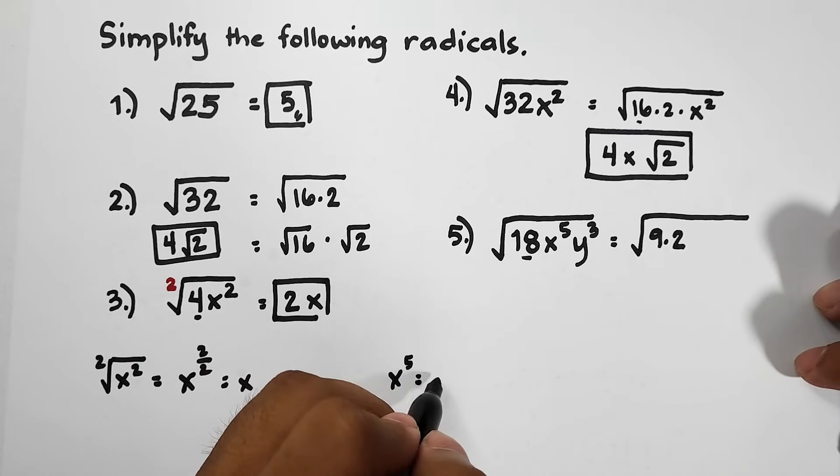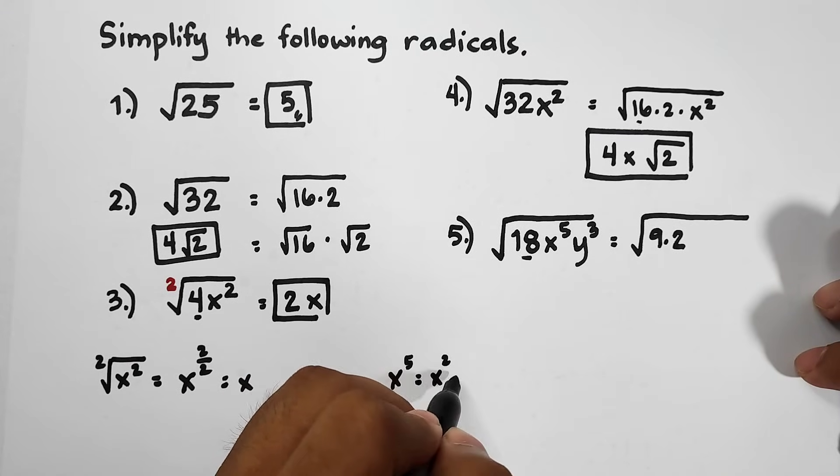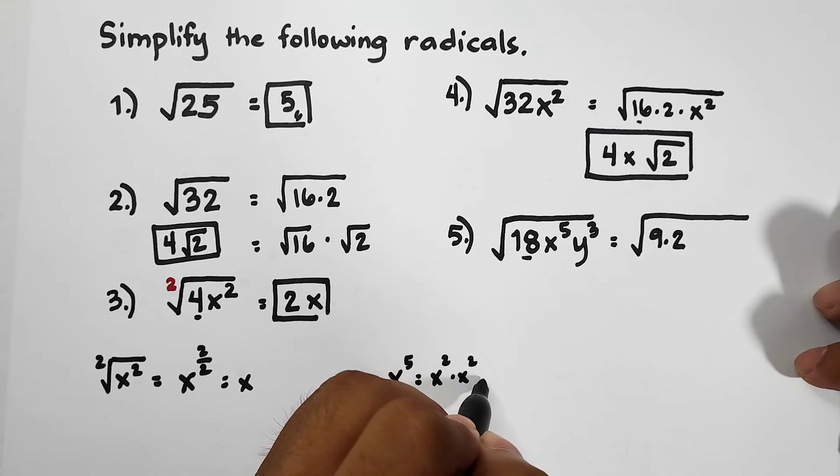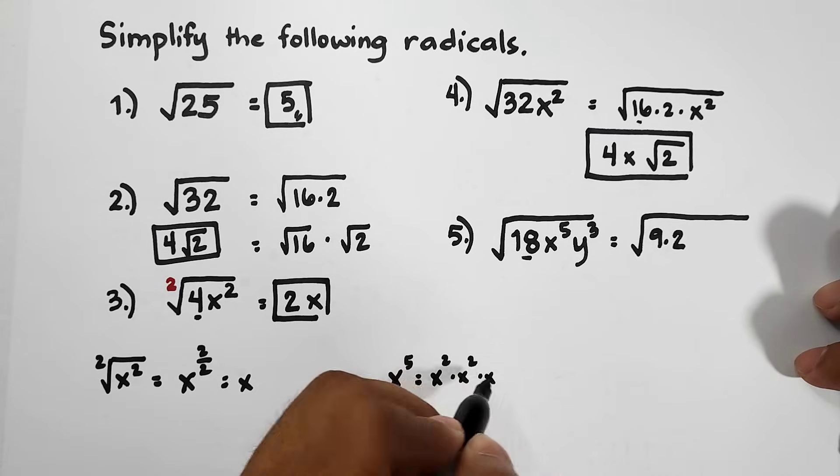You can factor x to the 5th power as x squared times x squared times x.